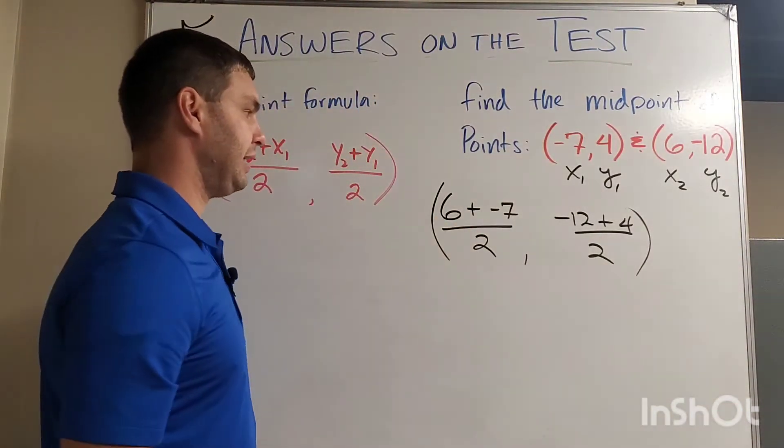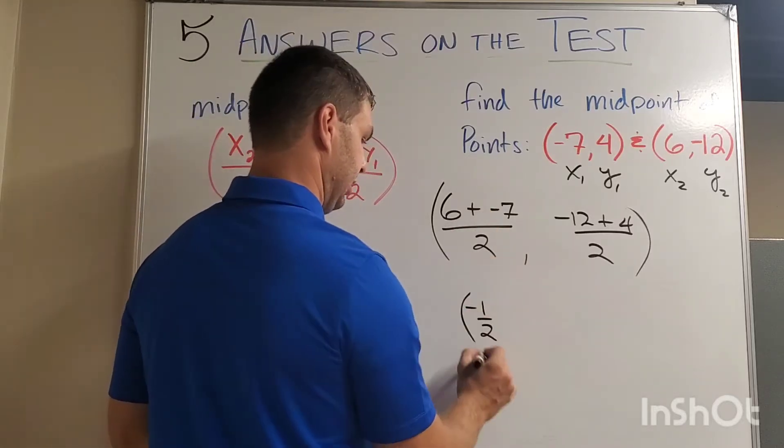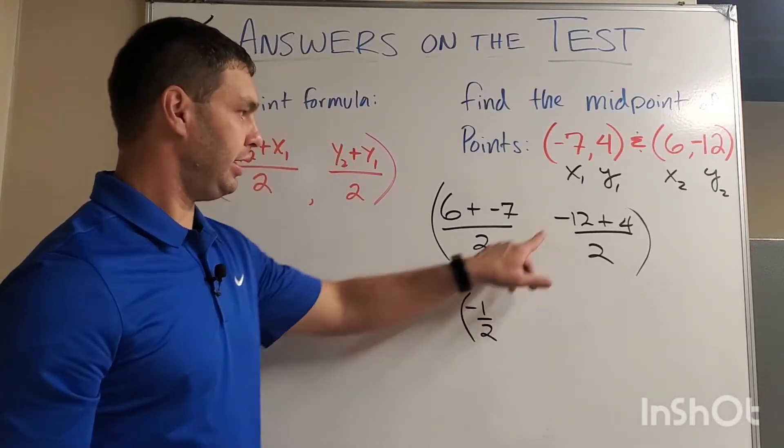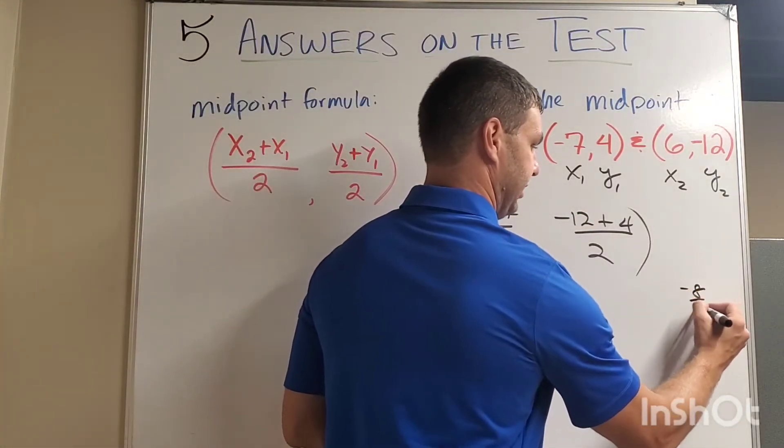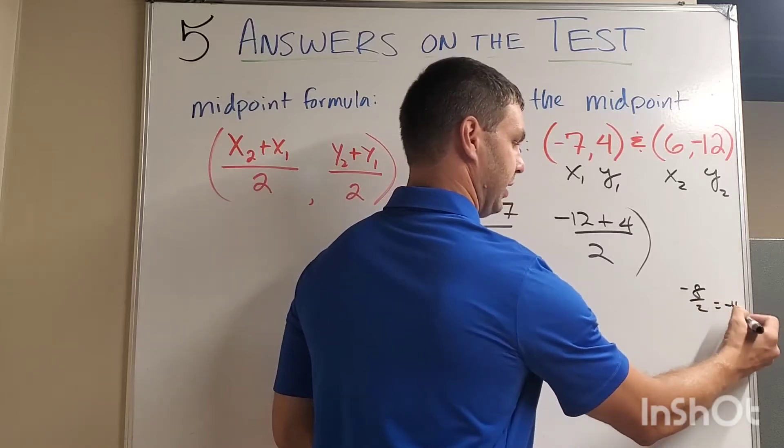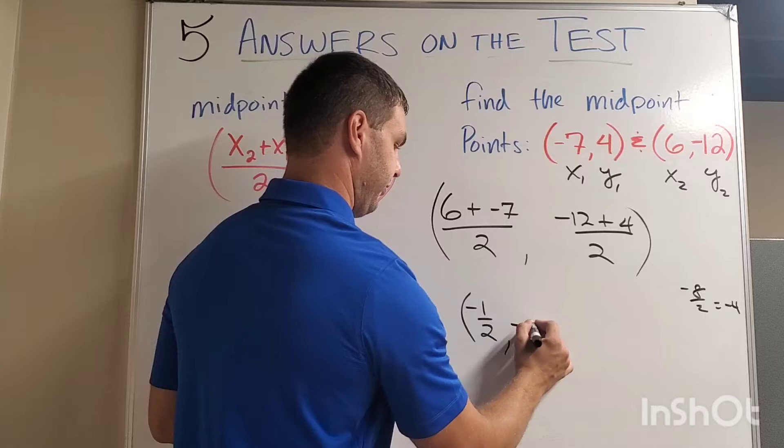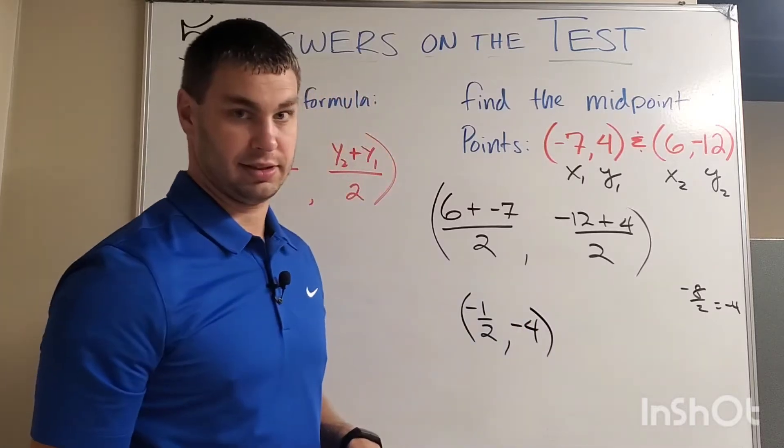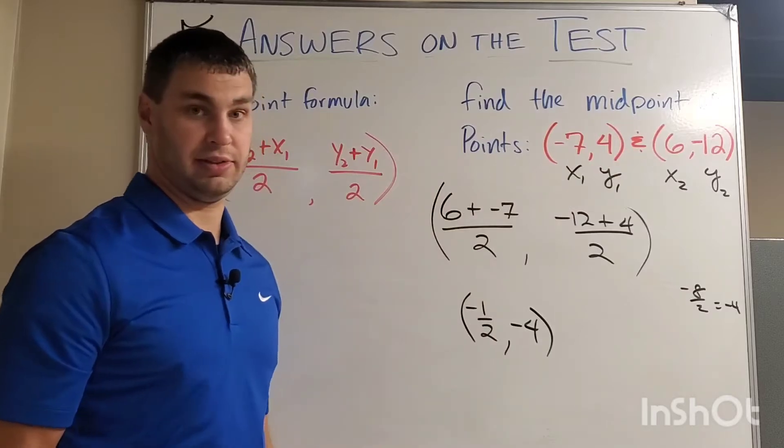And then it's just a matter of simplifying these until we get an ordered pair. Six plus a negative seven is negative one. Negative one over two is just negative one half. We can leave it that way. Negative 12 plus four is negative eight. And you do a little side work. That's okay. Negative eight divided by two is negative four. So, over here we'd have negative one half for the X's and negative four for the Y's. And this is the midpoint of those two points over there.